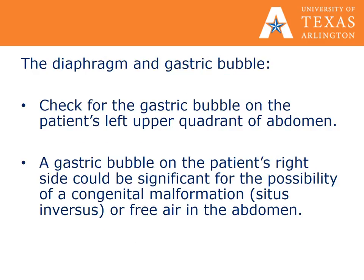It is important to note what side of the body the gastric bubble is on. It should be seen on the patient's left upper quadrant of the abdomen. A gastric bubble on the patient's right upper quadrant should raise concern for congenital malformation such as situs inversus or free air in the abdomen.